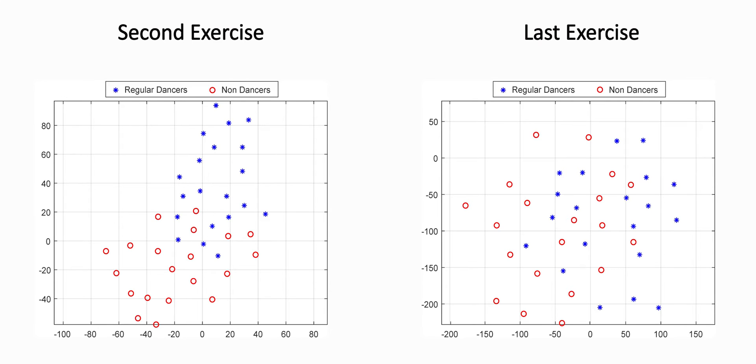By assuming the regular dancers have good learning skills, the convergence of the non-dancers profiles to those of the regular dancers indicates that the overall guidance and rhythm profiles of the users have been improved, thus validating the learning effect of our training.